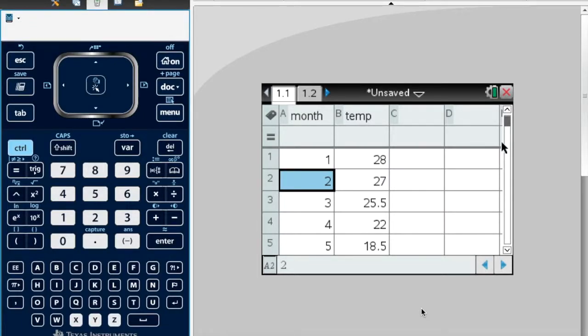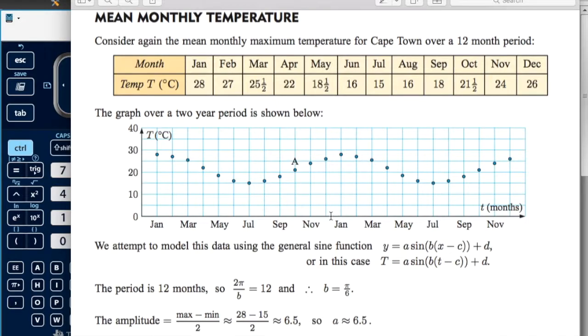This video is just going to show you how to model a sine function using data. We're going to do the example shown in the Hayes and Harris book to model the mean monthly temperature.